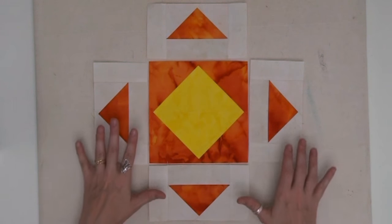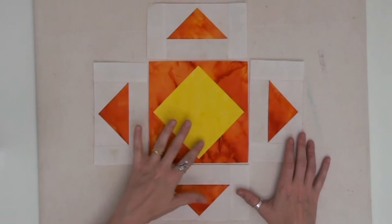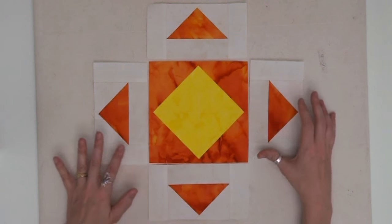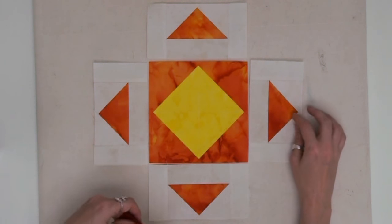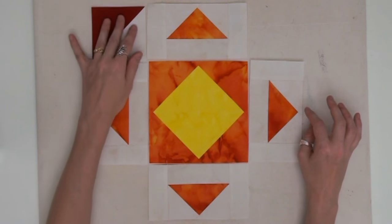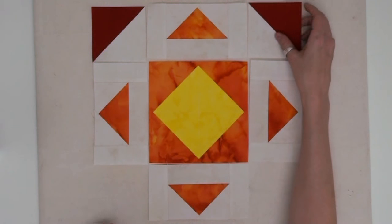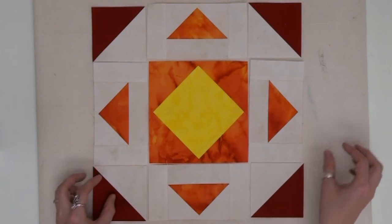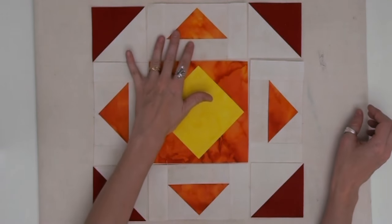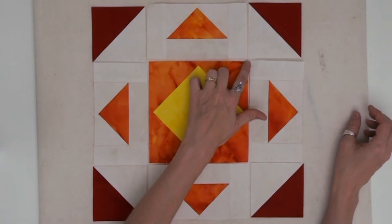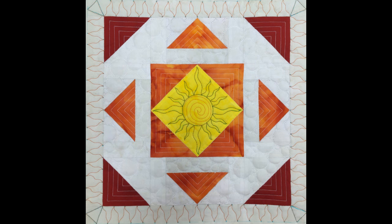To create your sun explosion block you're going to place your square in a square block in the center and surround it with our side units with these beautiful flying geese. You want to make sure all of these are pointing outward and then surround those, put in the corners our half square triangles, and also make sure that these are pointing outwards as well. To piece your block you're just going to work in rows piecing these units together and then piece the rows together making sure to match seams. Attach your borders and here's what it looks like when you finish block number 12.